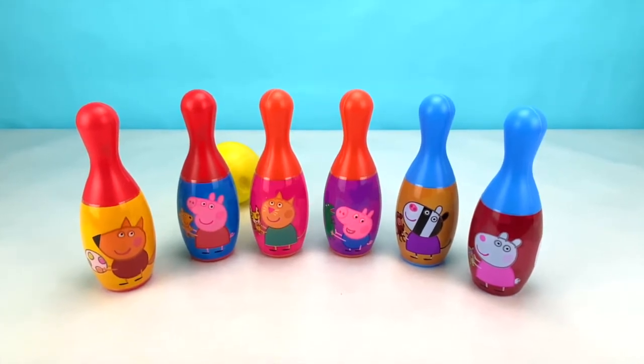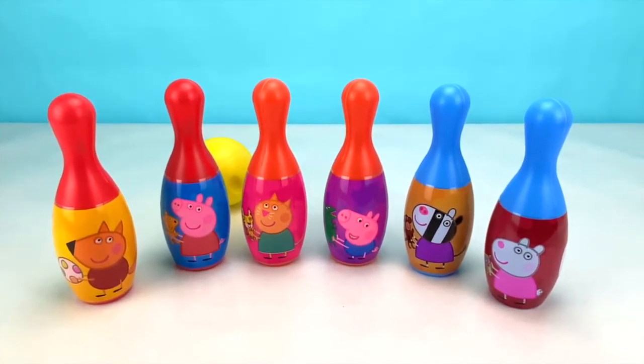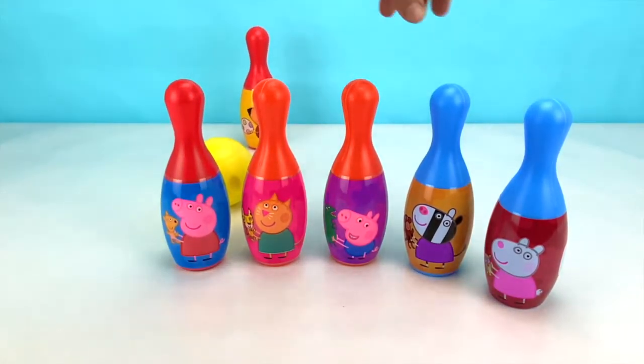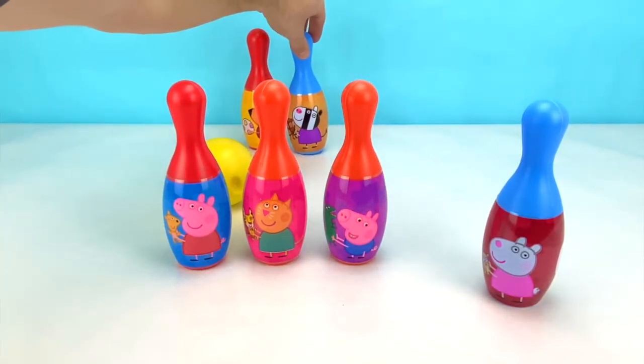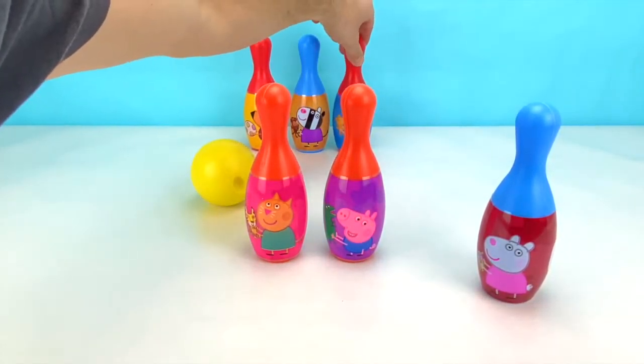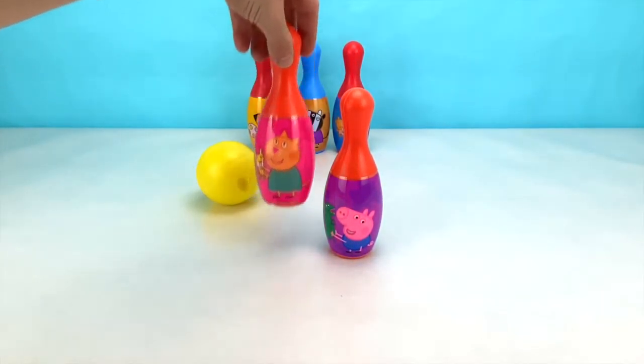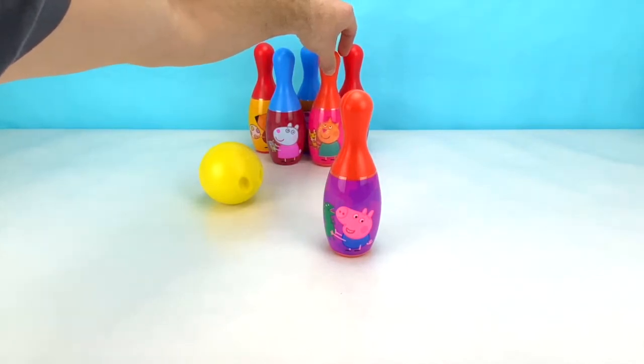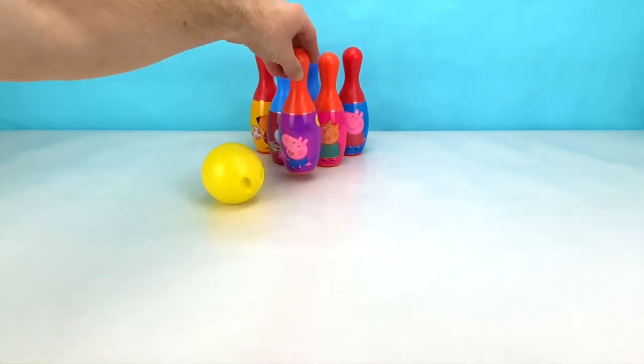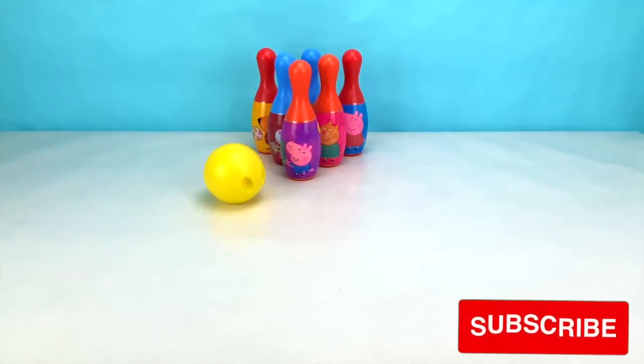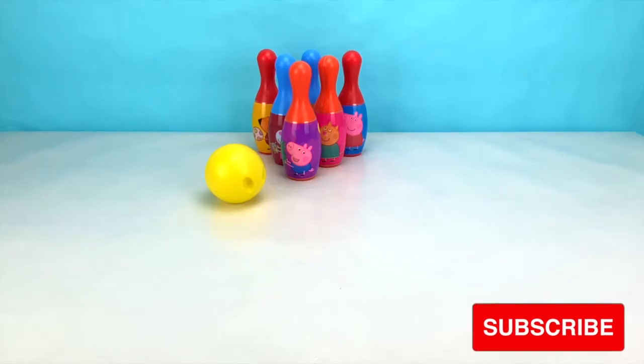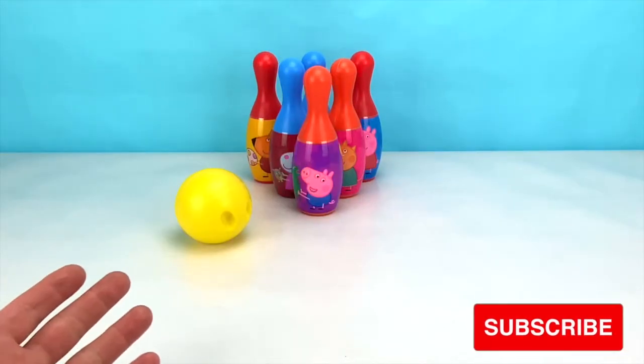Let's set up these pins now and see how many we can knock over! We'll put Freddy, Zoe, and Peppa at the back, Peppa Pig, Suzie Sheep, and Candy in the second row, and George at the front! George is my favorite character! Who's your favorite character? That's great! I love that one too!